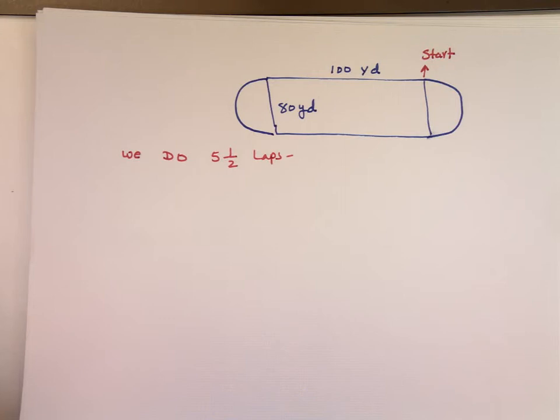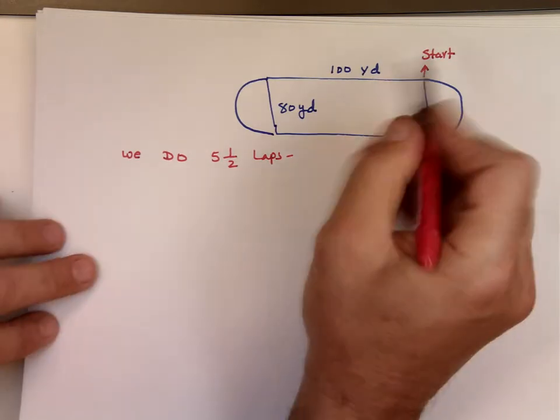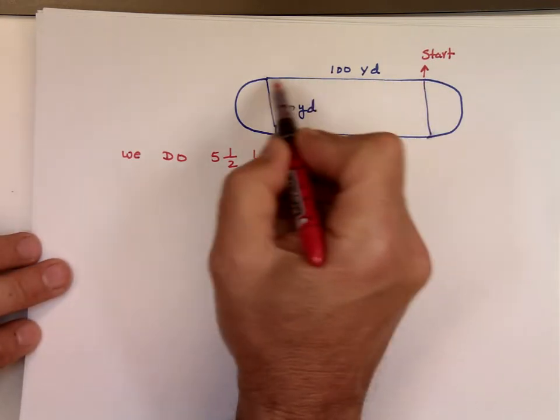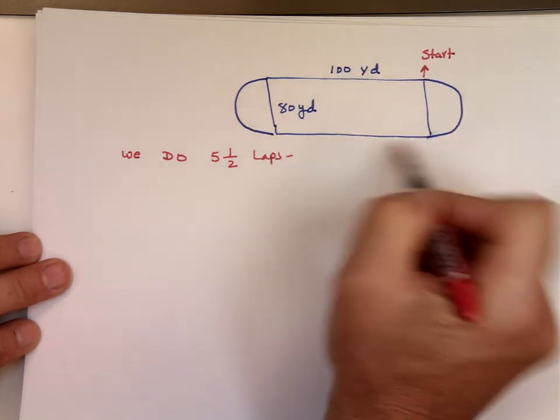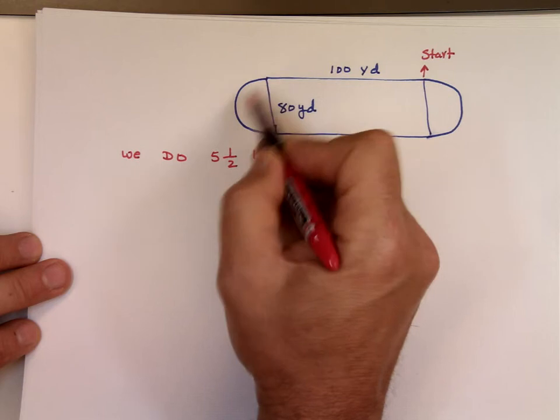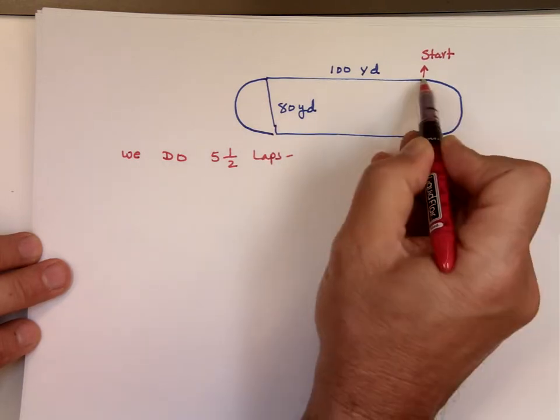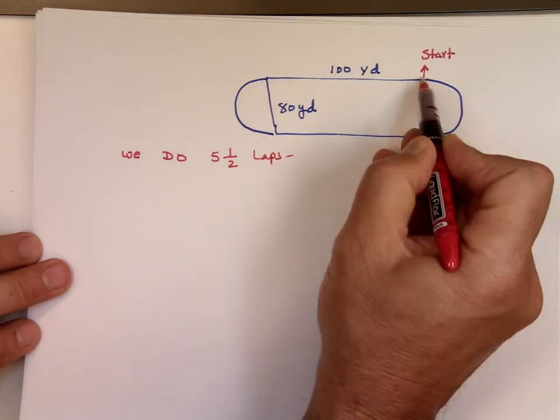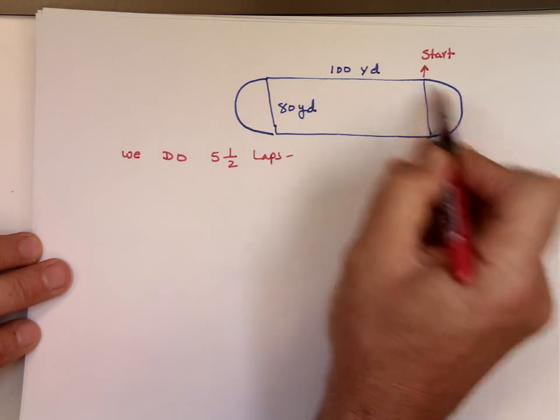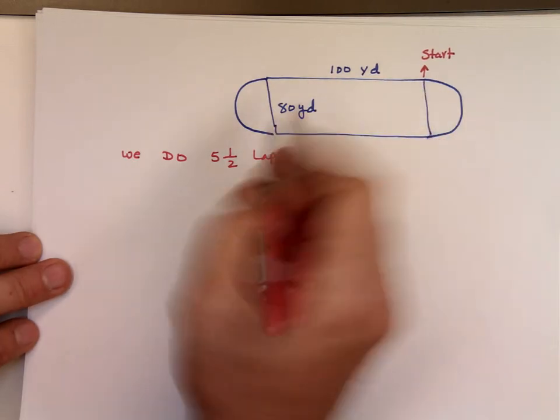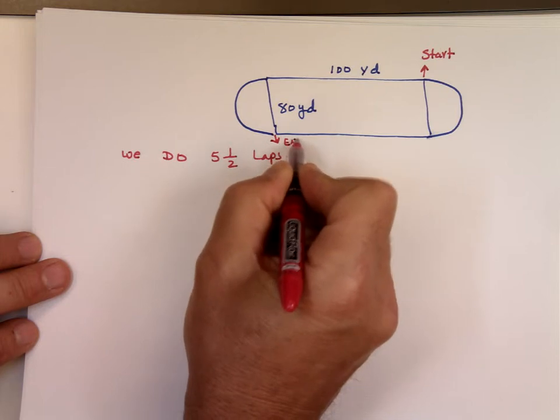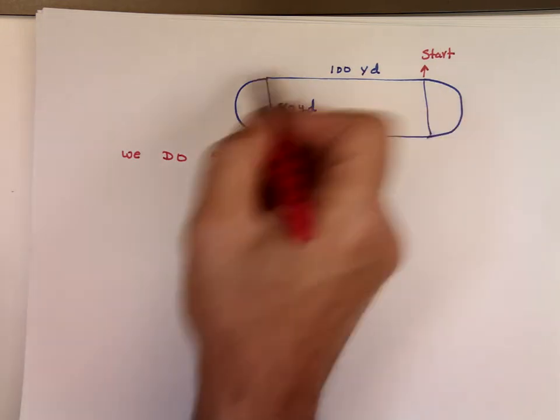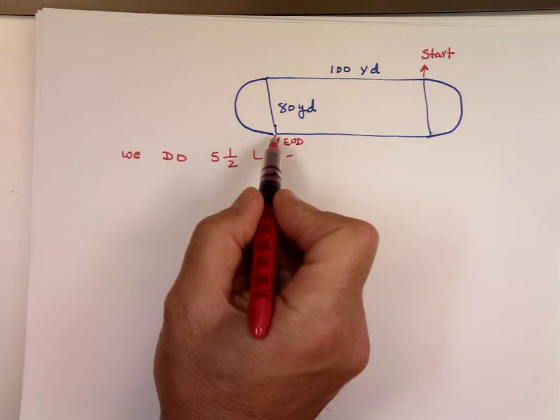What does that mean, five and a half laps? You start from here. You went all the way around once, another time, twice, another time, three times, four times, five times. And where is the sixth one? You stopped right here, right? That's where you ended. That's when you quit. You went five times around this and on the sixth time you stopped right here.